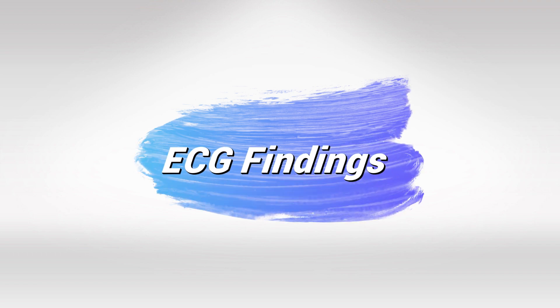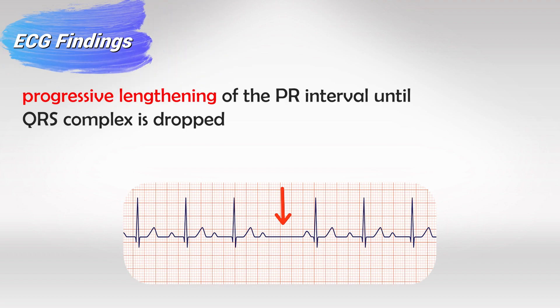The ECG findings are very interesting and if you have any exam that includes interpretation of an ECG, you will most likely get this example. You will see that the distance between the P waves and the QRS complexes progressively increases, and then suddenly the QRS complex is dropped and the distance goes back to normal, then gradually increases again. This pattern is exclusive to this condition only.